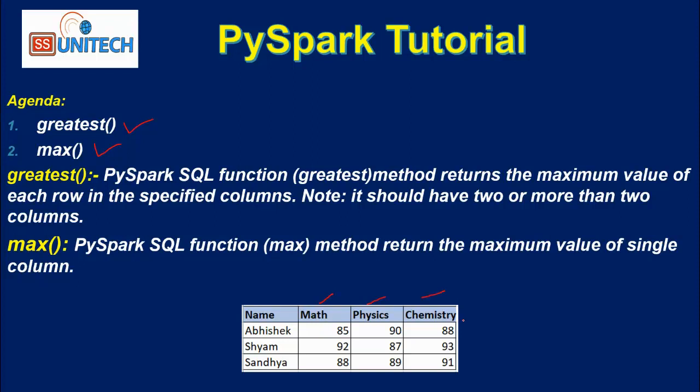if we want to check the maximum between the rows, like what will be the maximum value on this row, that is 90. If you want to check the maximum value between the rows, then we should use the Greatest function. If we want to check the maximum value on a particular column, then we have to use the Max function. This is the only difference between Greatest and Max function.